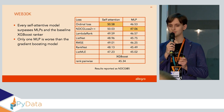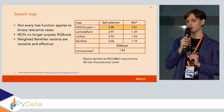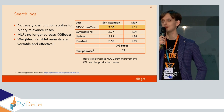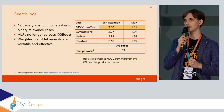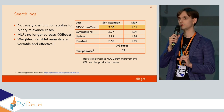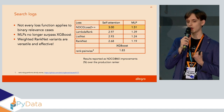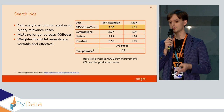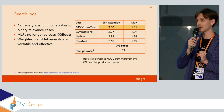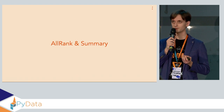For our search log dataset, results are reported as NDCG at position 60, as improvements over the production ranker — we cannot disclose the production ranker details or baseline results. Not every loss function applies to binary relevance cases, so only four loss functions are applicable. MLPs no longer surpass XGBoost here because it's a much more difficult setting. Weighted RankNet variants — specifically LambdaRank and NDCG Loss 2++ — are versatile and effective. It's worth noting that RankNet is a loss function first developed around 2005 and is still very effective.